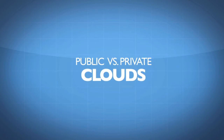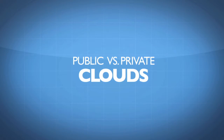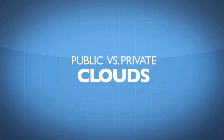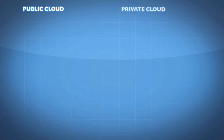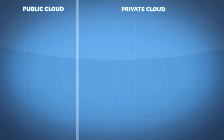What I want to do right now is diagram for you this concept of a public versus a private cloud. In both cases, we are going to have systems on our own corporate network. This is going to represent sort of the cloud — the internet essentially. This is a boundary between the internet and our own corporate network.